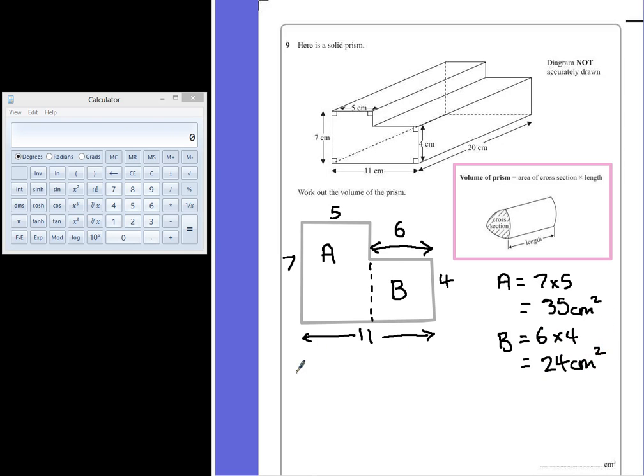So our total cross-sectional area is just those two values added together, 35 add 24 which gives us a cross-sectional area of 59cm squared.